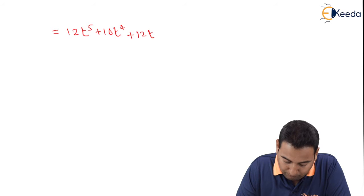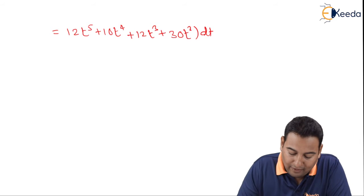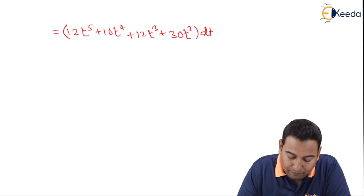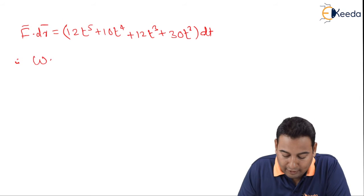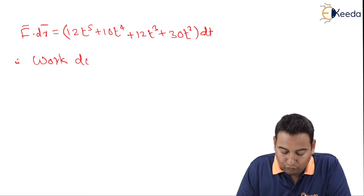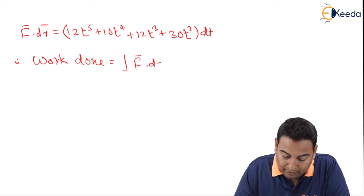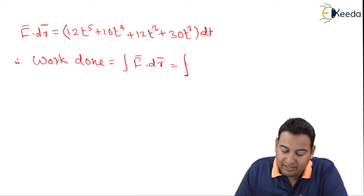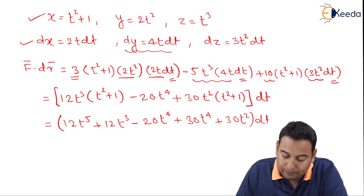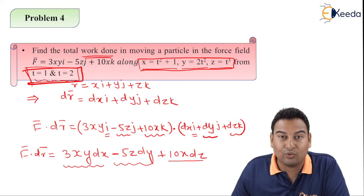Plus 12t cube plus 30t square into dt. This is the final simplification. Here we have F bar dot dr bar. Therefore work done, we need to integrate this F bar dot dr bar, which is equal to integration.